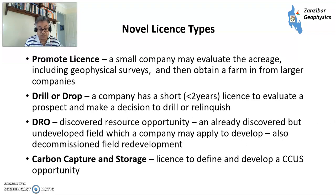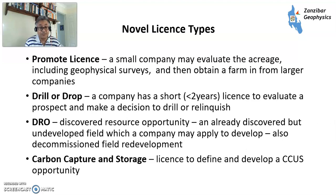Or you may have field redevelopment, where a field has been producing and decommissioned, but someone else comes in and develops it again using new wells, new technology, and new facilities. An example is the Argyll field in the UK, originally developed by Hamilton Brothers as Argyll, then later developed as Alma and then as Galia. Another novel licence type that has had a big emphasis recently is carbon capture and storage — CCUS. You define and develop a CCUS opportunity with facilities. The UK recently had a carbon capture and storage round where six areas were awarded for potential CCUS licensing, and Norway and other countries are also now implementing this.